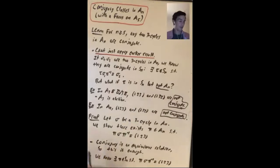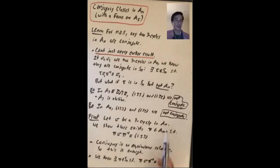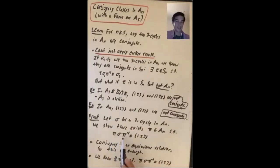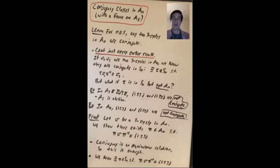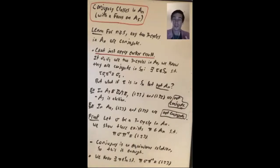I'm going to do the first part of the proof of this lemma. Let sigma be any 3-cycle in AN. What we're going to show is that there's a permutation pi in AN such that pi·sigma·pi⁻¹ is the particular 3-cycle (1,2,3). Remember, conjugacy is an equivalence relation. So if every sigma is conjugate to (1,2,3), then if you have two 3-cycles sigma1 and sigma2 that are both conjugate to (1,2,3), they're also conjugate to each other. We're going to send everything to (1,2,3).